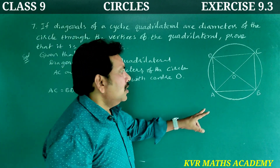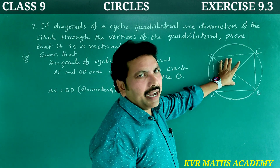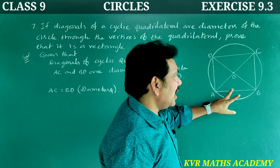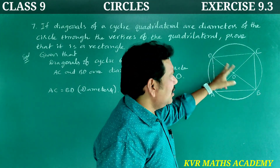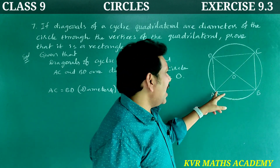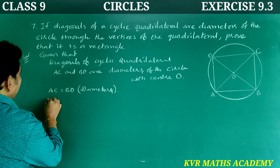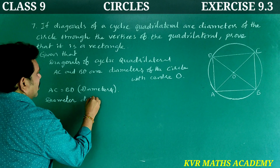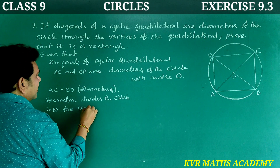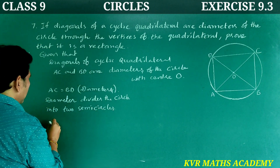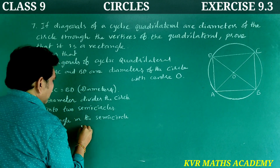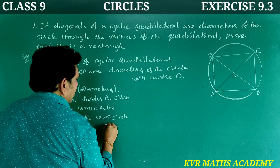AC is the diameter and divides the circle into two congruent semicircles. The angle in a semicircle is 90 degrees, so angle D = 90° and angle B = 90°. Next, BD is the diameter and divides the circle into two congruent semicircles, so angle C = 90° and angle A = 90°.